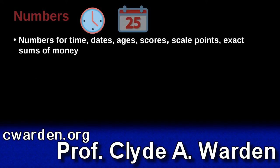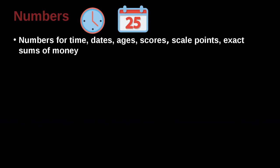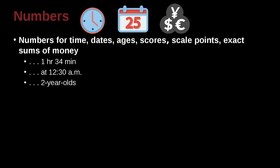Numbers for times, dates, ages, scores, scales, points, and exact sums of money, you should also use the numbers. 1 hour 34 minutes for example, 12:30 a.m., 2 years old, scored 4 on a 7-point scale because that's a scale.